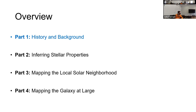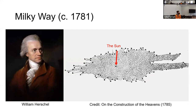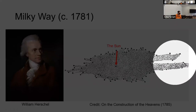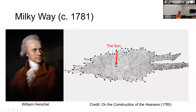Let's go into the history and background of galactic cartography. This has been going on for quite a while. In fact, William Herschel made a map of our own galaxy way back around 1781, published in his tome on the construction of the heavens in about 1785. That map is shown here on the right — a map of our galaxy made almost 240 years ago.